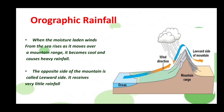The opposite side of the mountain is called the leeward side, which receives very little rainfall. The side that receives heavy rainfall is called the windward side.